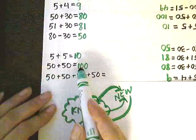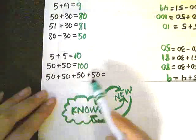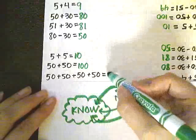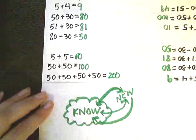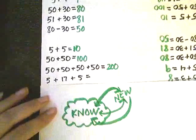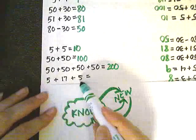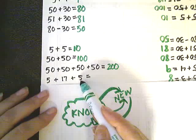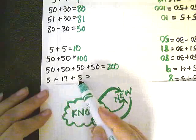Next, we have 50 plus 30. Well, I know, your child will probably say, that 5 plus 3 is 8. That means 5 ones plus 3 ones is 8 ones. 50 is the same as 5 tens. So 5 tens plus 3 tens is 8 tens, or 80.